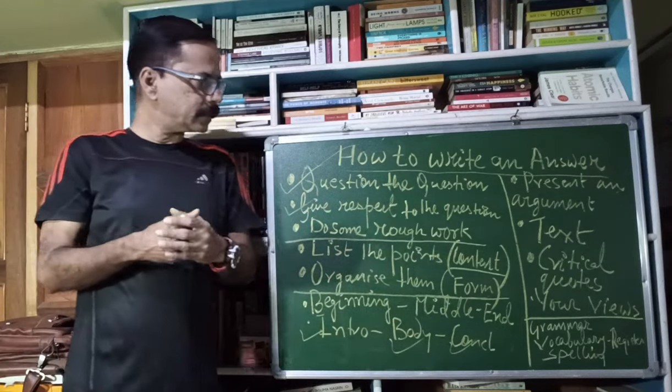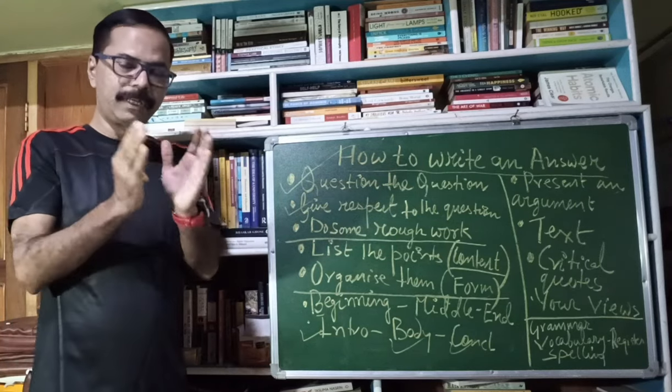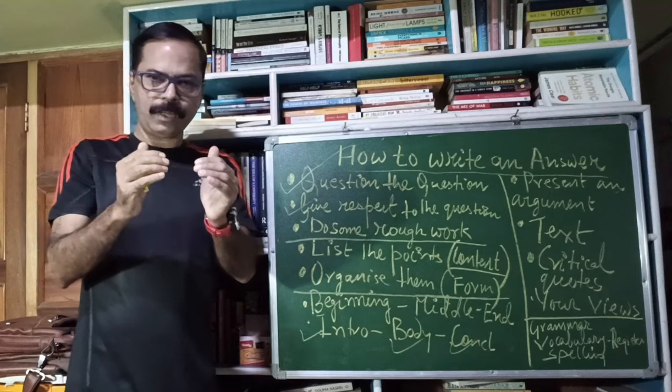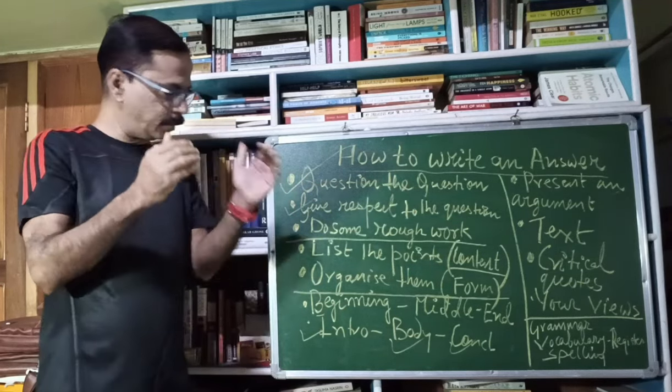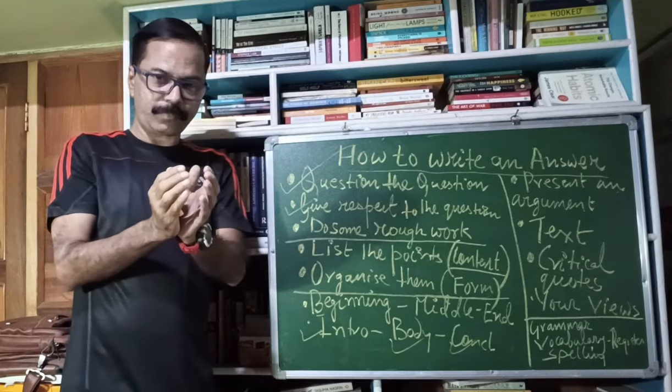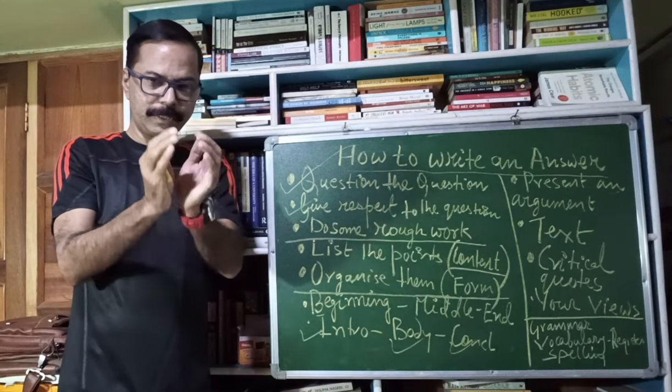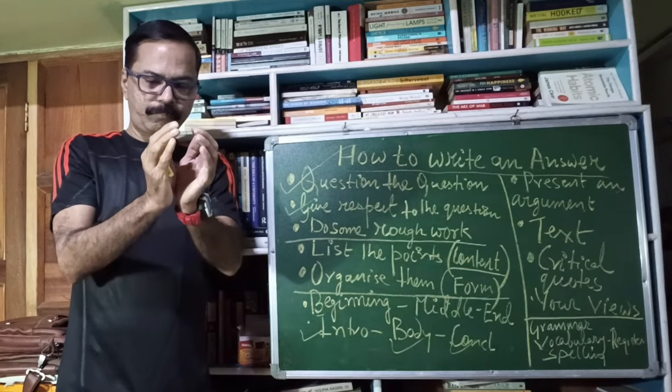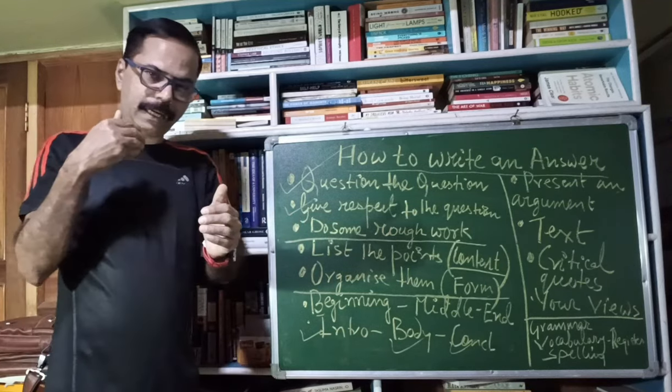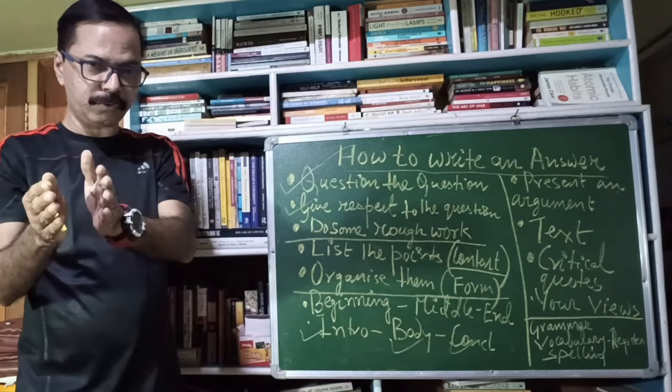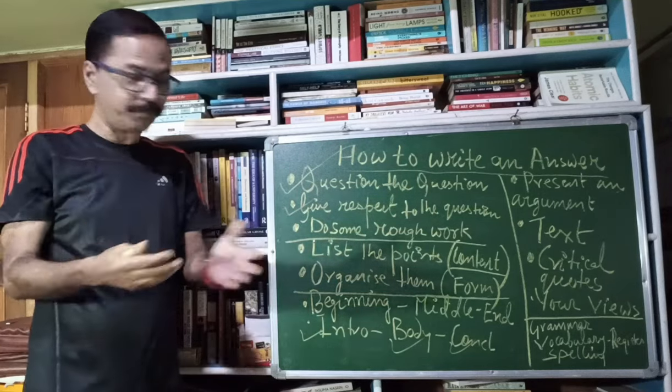Now in a literature answer, you are expected to present an argument. So the body of the answer will have an argument. So you will have to present not one, but multiple perspectives. In the introduction itself, of course, you will give your thesis. Introduction will give us the direction. Your thesis will be presented in the introduction itself. And in the body, you will have to put the antithesis and then the synthesis in the conclusion. So thesis, antithesis and synthesis, that is the dialectics of your answer.